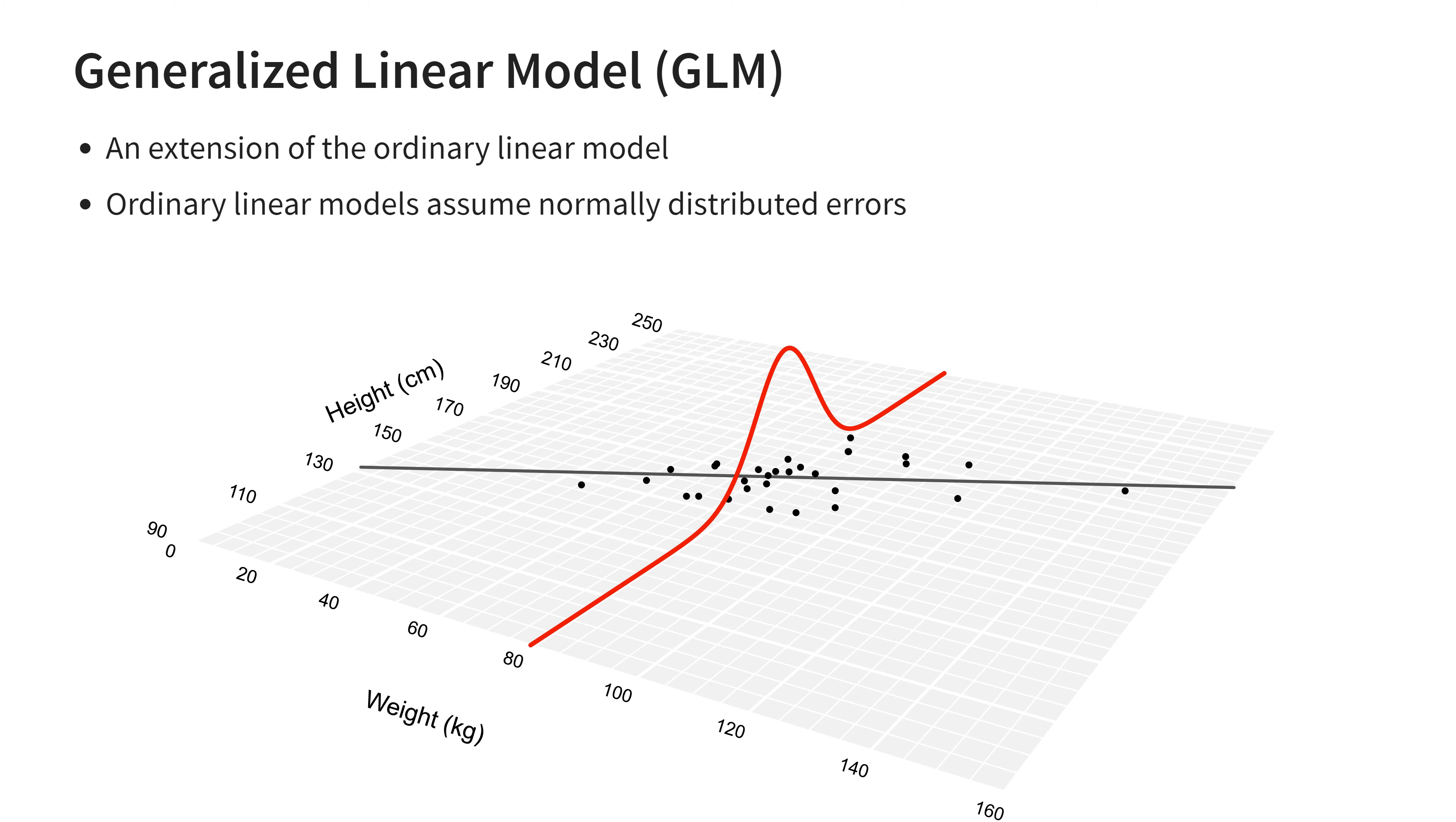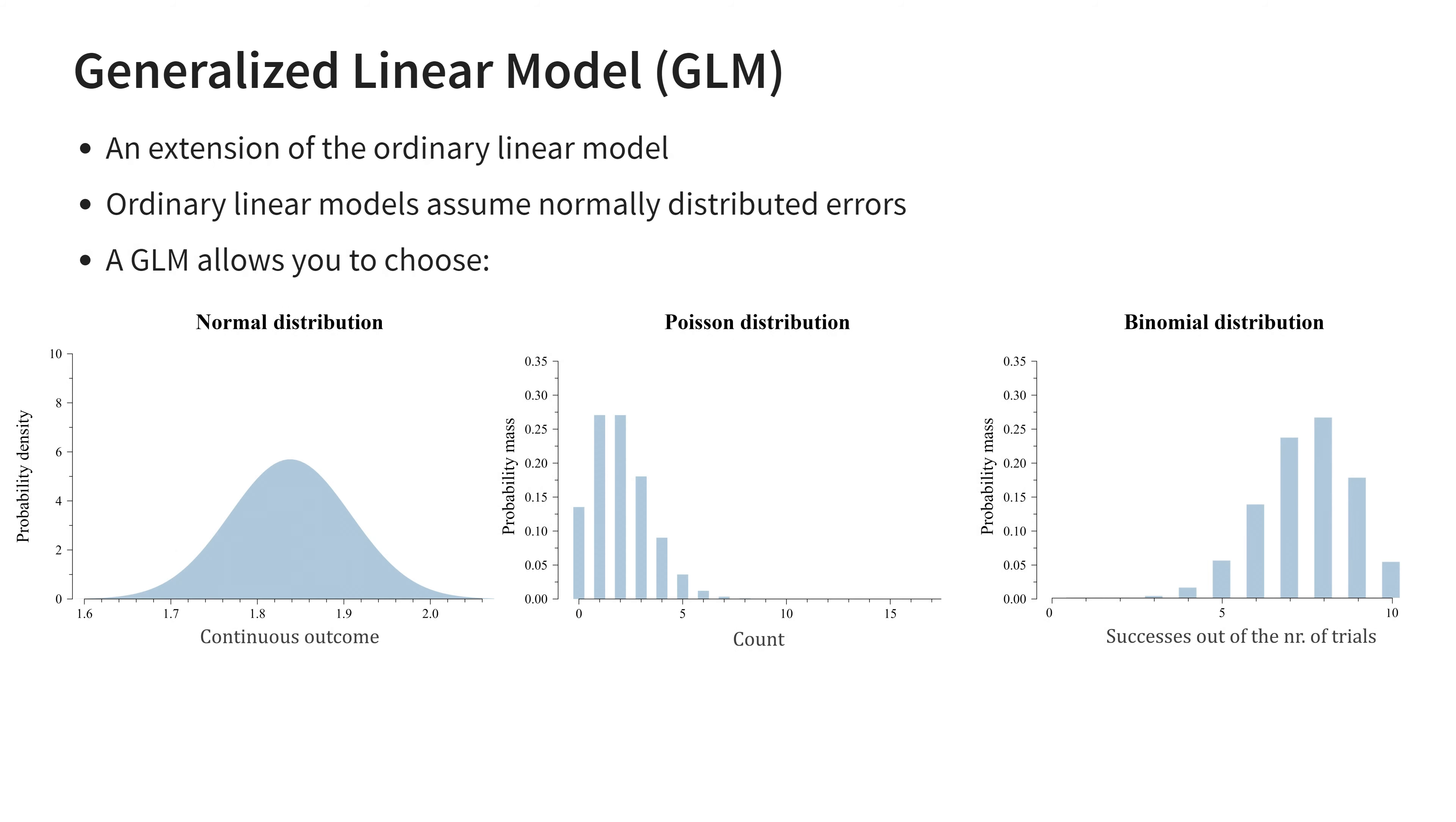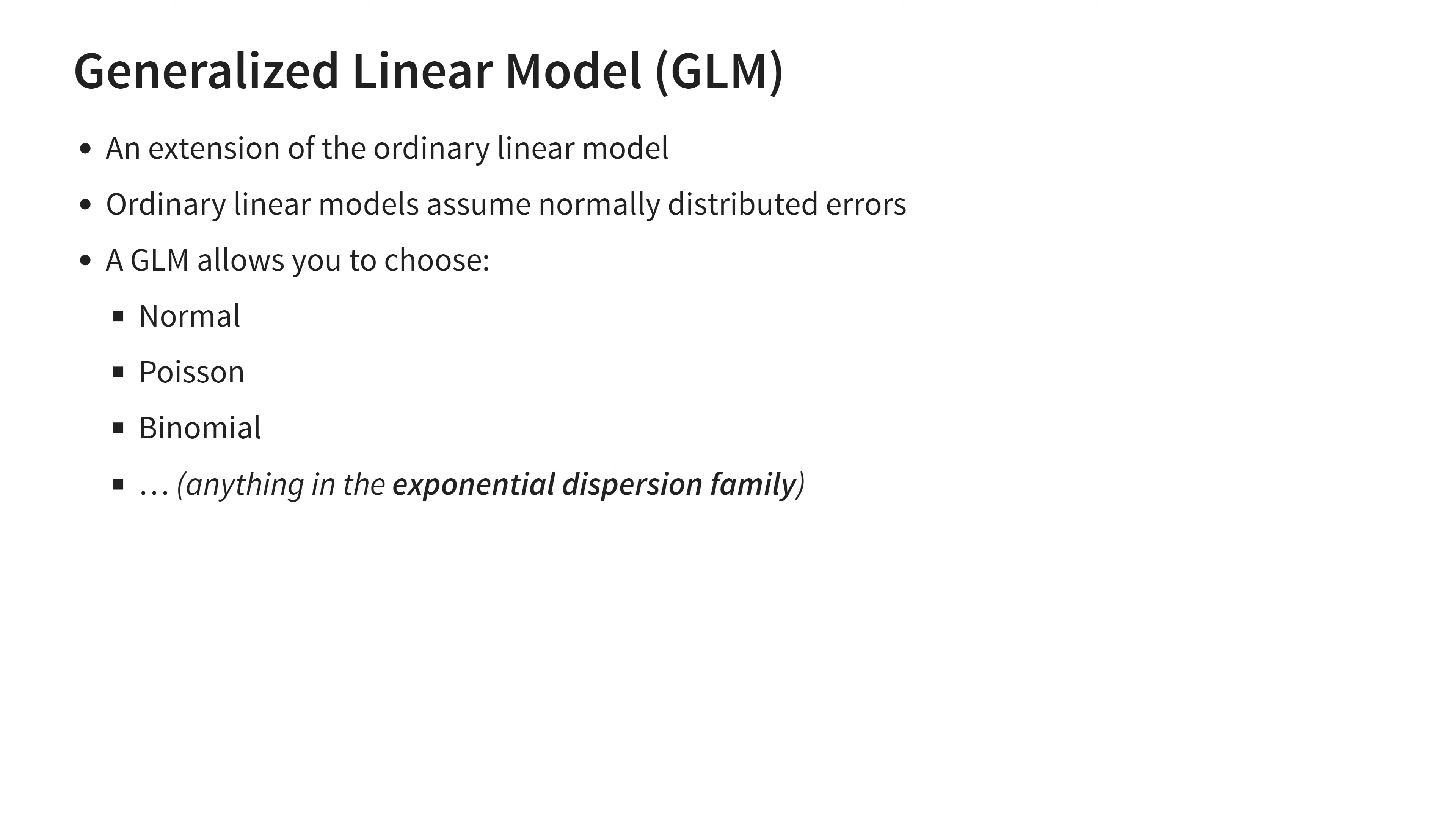The generalized linear model, or GLM, is an extension of the ordinary linear model. Whereas ordinary linear models can only assume normally distributed errors, a GLM allows you to choose from a number of different probability distributions.